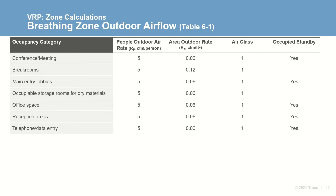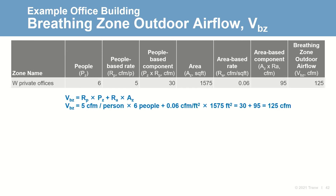Going back to our example building, each zone's breathing zone outdoor air flow requirement can be determined based on the prescribed ventilation rates and the design characteristics of the space. For the private offices on the western face, the people-based rate is multiplied by the design population: 5 CFM per person times 6 people, coming out to 30 CFM. Next, the area-based rate is multiplied by the zone area: 0.06 times 1,575 square feet, resulting in 95 CFM. These values, 30 and 95 CFM, are summed to determine the total breathing zone outdoor air flow: 125 CFM.